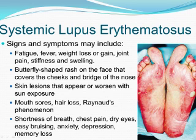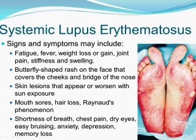Lupus is a chronic autoimmune disease that can damage any part of the body — the skin, joints, and organs inside the body. Chronic means that the signs and symptoms tend to last longer than six weeks and often for many years. In lupus, something goes wrong with the immune system, which is part of the body that fights off viruses, bacteria, and germs — the foreign invaders like the flu. Normally, our immune system produces proteins called antibodies that protect the body from these invaders. Autoimmune means the immune system cannot tell the difference between those foreign invaders and the body's healthy tissue. Auto means self, and it creates autoantibodies that attack and destroy healthy tissue, causing inflammation, pain, and damage in various parts of the body.